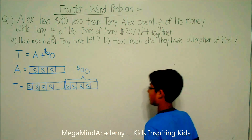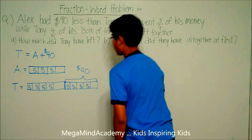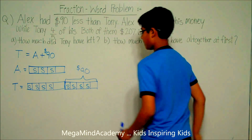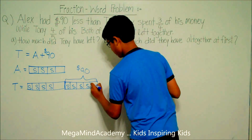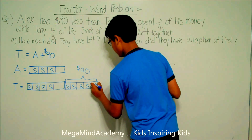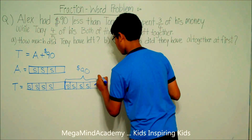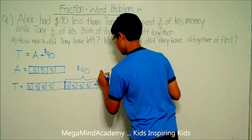And we know that one-fifth of $90 is equal to $18. So this section is equal to $18.